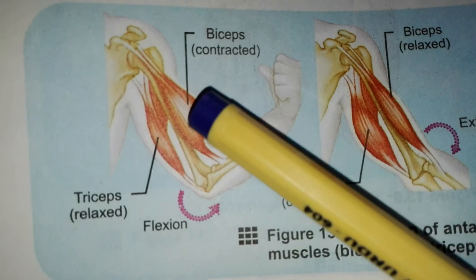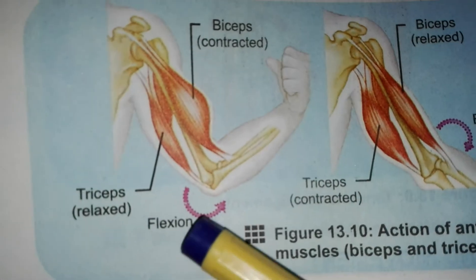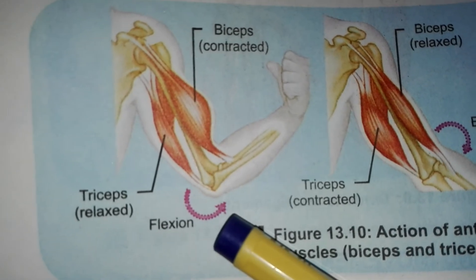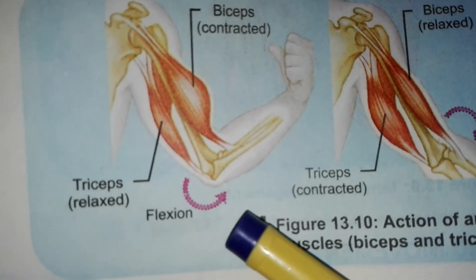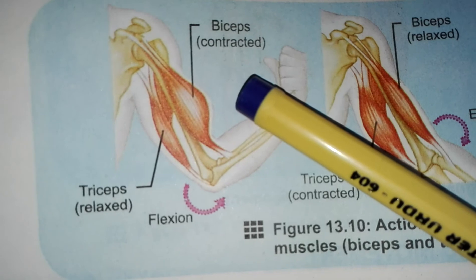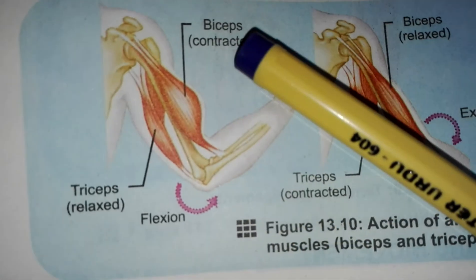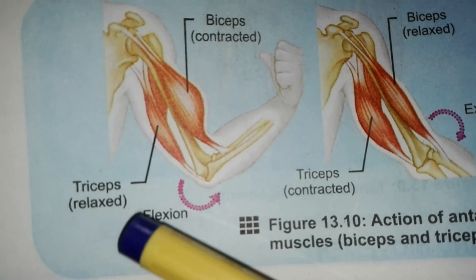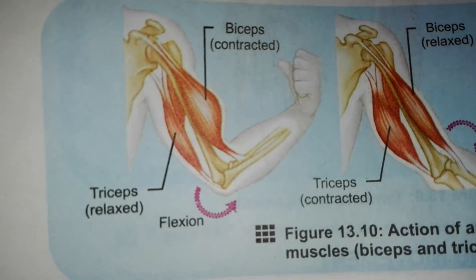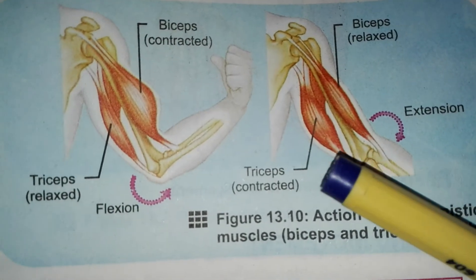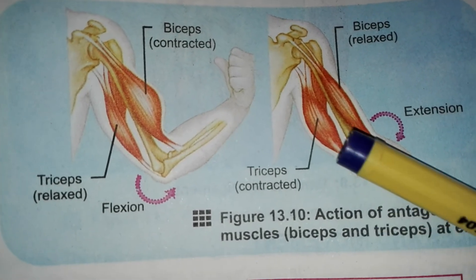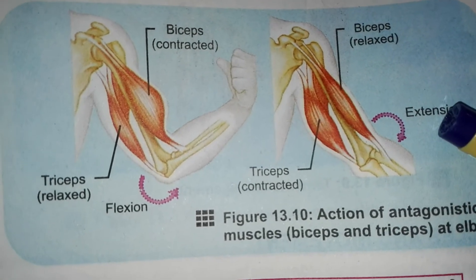When biceps contract, the elbow joint bends — this is flexion. During flexion, triceps must relax. When triceps contract, biceps relax and the elbow joint straightens — this is extension.